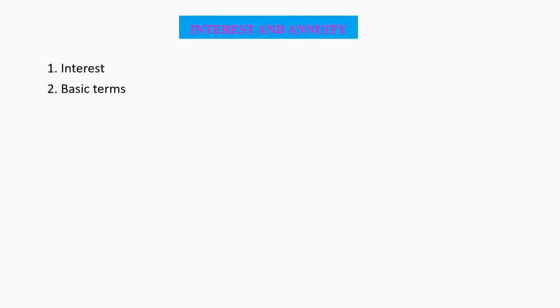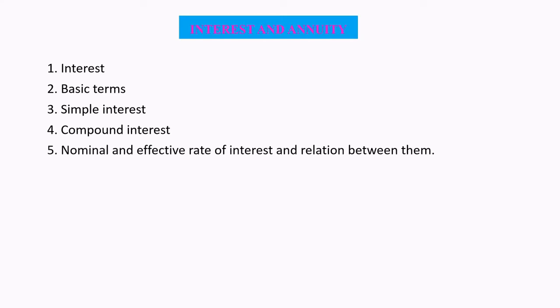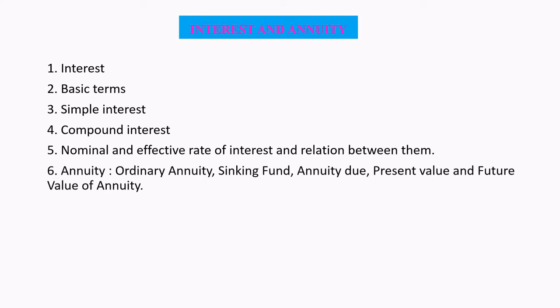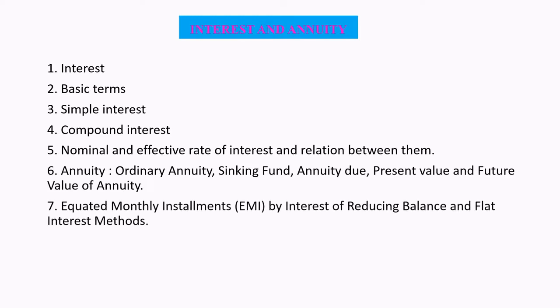In this lecture we will learn: interest, basic terms, simple interest, compound interest, nominal and effective rate of interest and the relation between them. Number 6 is Annuity — covering ordinary annuity, sinking fund, annuity due, present value and future value of annuity. Number 7 is Equated Monthly Installment (EMI) by interest of reducing balance and flat interest method.